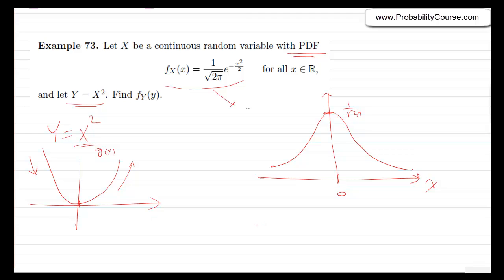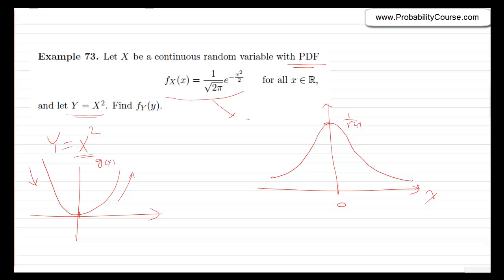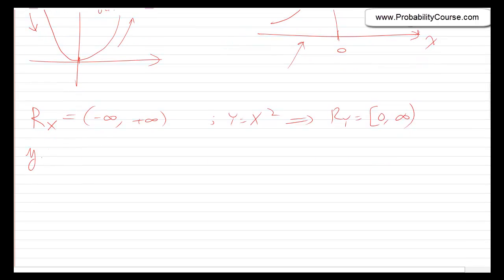It's always a good idea to find the range of y even with this method. In this case, x can take any value from minus infinity to plus infinity. Since y equals x squared, the range of y is all values from 0 to infinity. So for a y in this range, I am interested in finding the pdf of y.